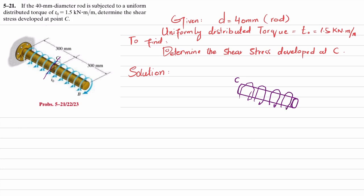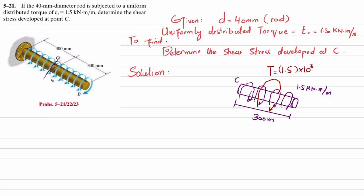You have a uniformly distributed torque of 1.5 kilonewton·meter per meter. The total length from point B to C is 300 millimeters, which is 0.3 meters. To convert it into a resultant torque, the torque will be equal to 1.5 × 10³ newton·meter multiplied by the total length of 0.3 meters.